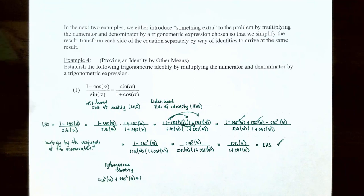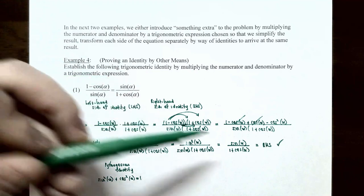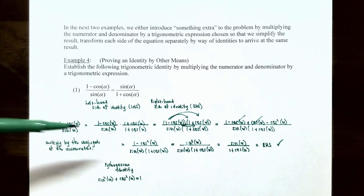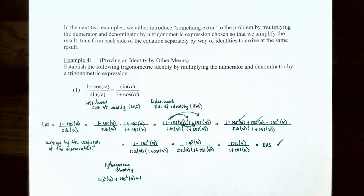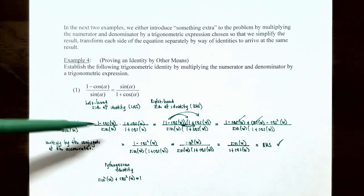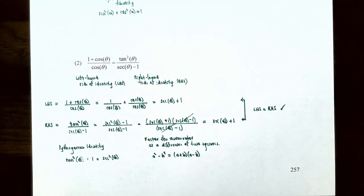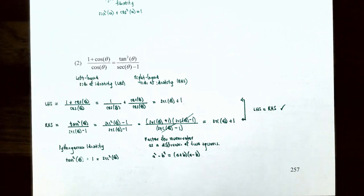We started with the left-hand side, multiplied by 1 in a creative way using the conjugate (1 + cos α) in both numerator and denominator, applied a Pythagorean identity, and arrived at the right-hand side. For number 2, establish the identity: (1 + cos θ) / cos θ = tan²θ / (sec θ − 1).